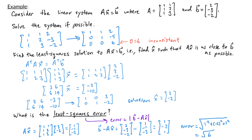That's how you find the least squares solution to a linear system A times x equals B. In our next video, we'll look at how having a QR factorization will make these calculations easier.